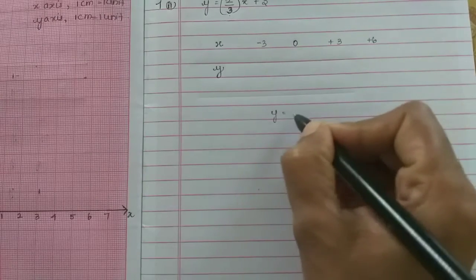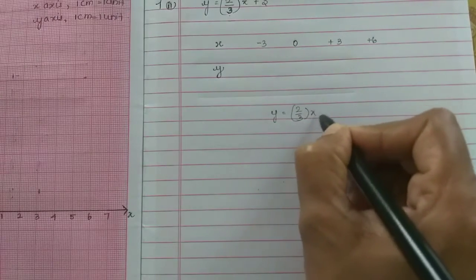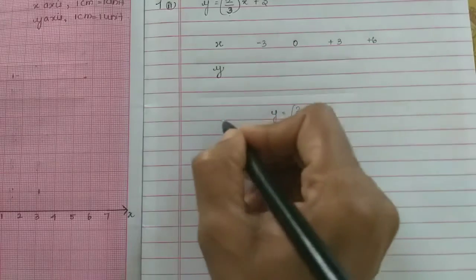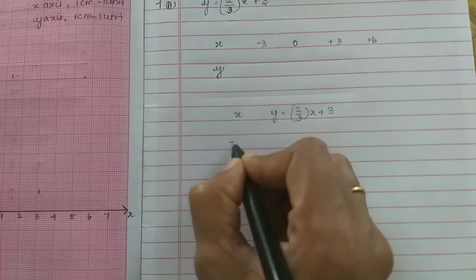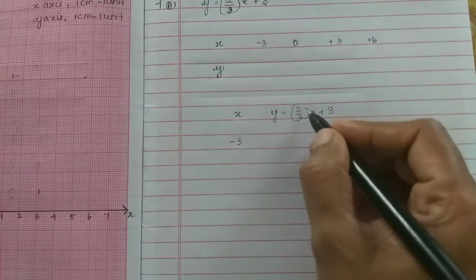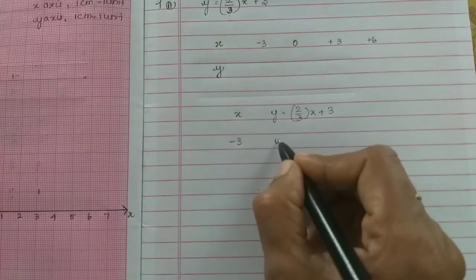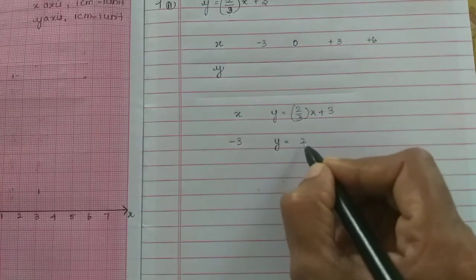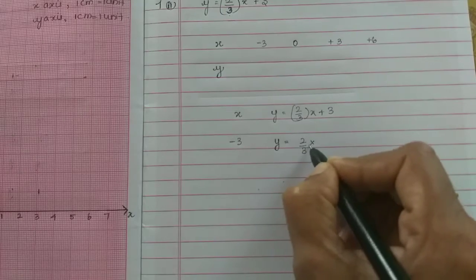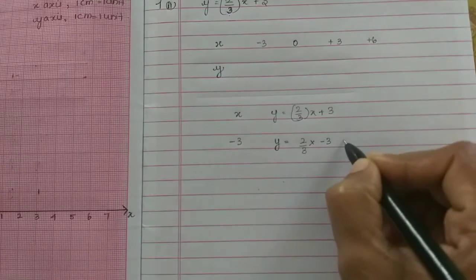Now, the equation is y equals 2/3 times x plus 3. So the x value first is minus 3. In the x value, minus 3. So y is equal to 2/3 times minus 3, then this plus 3.